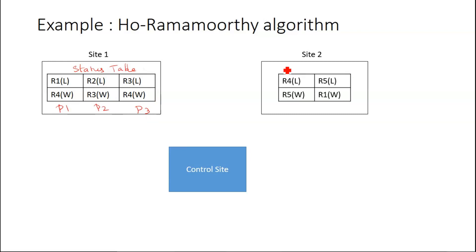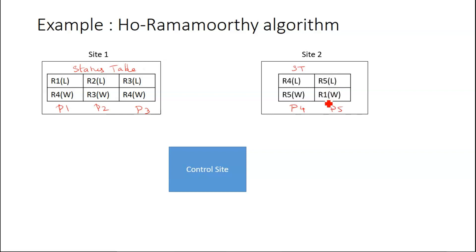Coming to site two, the status table for site two is as follows. Site two has two processes, P4 and P5. P4 is holding resource R4, which is locked by itself, and is waiting for R5. Process P5 has locked R5 and is waiting for R1. So this is the initial state.